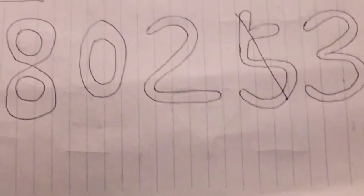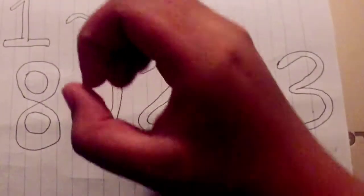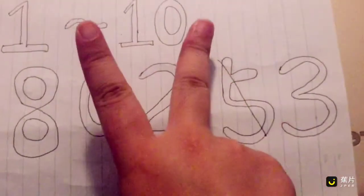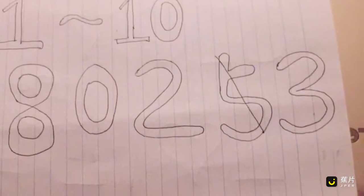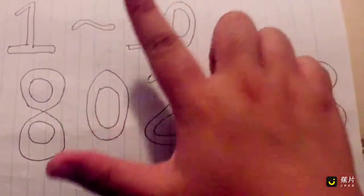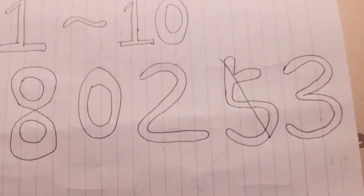Put them together. 8, 0, 2, 3 is exactly the gesture for L, O, V, E, love in Chinese Sign Language.